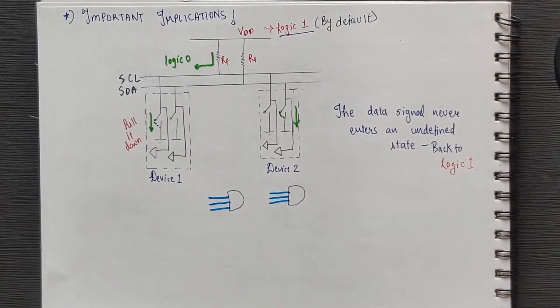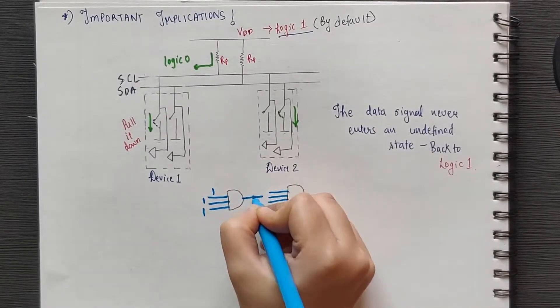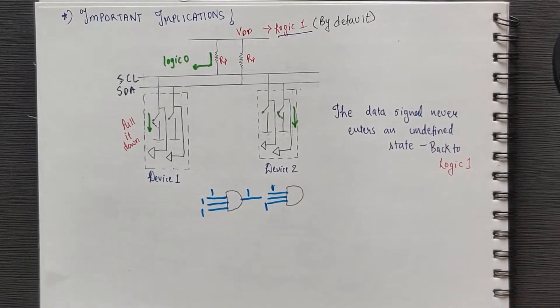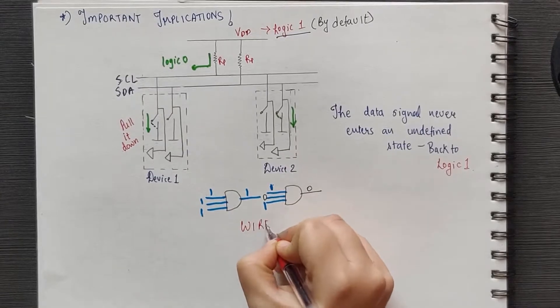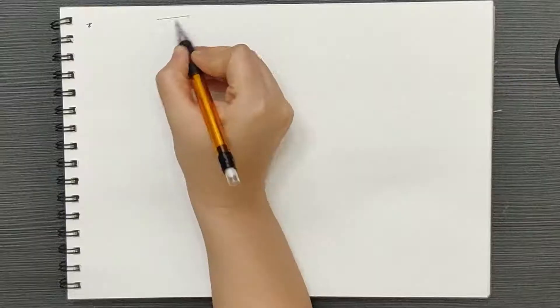This results in something called as wired AND configuration where if any 1 input is 0, then the output is 0. And if all the inputs are 1, then the output is 1.